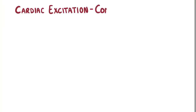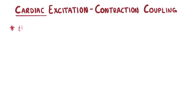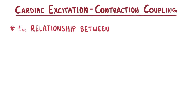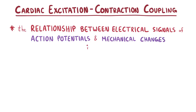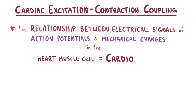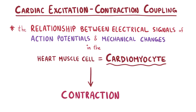Cardiac excitation-contraction coupling is the relationship between electrical signals in the form of action potentials and mechanical changes in the heart muscle cells, called cardiomyocytes, that causes them to contract.